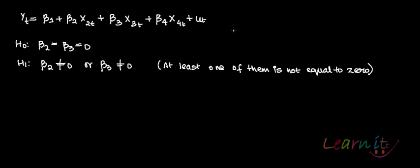Now let us look at joint hypothesis. What we have done till now is that we are looking only at individual hypotheses, where we looked at how individually beta 2 hat is significant or not, or individually beta 3 hat is significant or not. Now let us look at jointly whether beta 2 and beta 3 are significant or not.